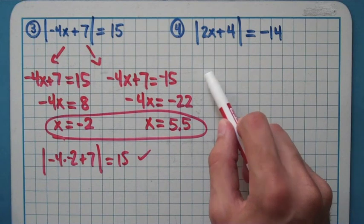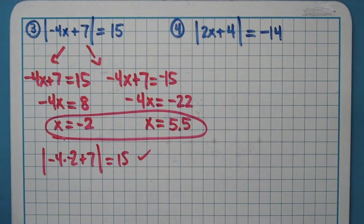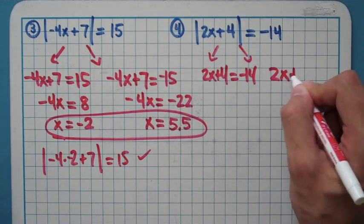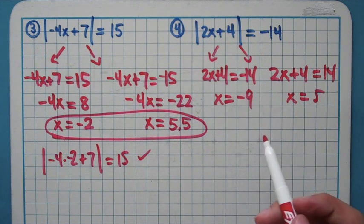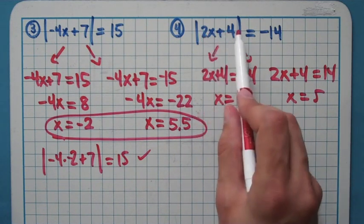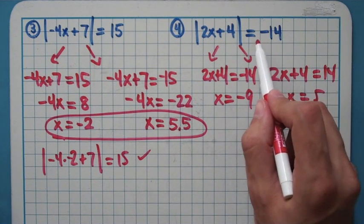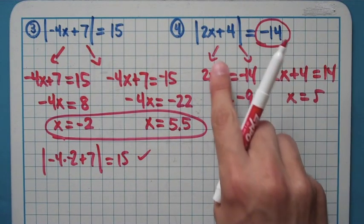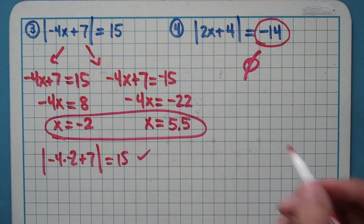One more problem: we have the absolute value of this expression equals negative 14. You might be tempted to jump straight into two bars, two equations, and you will get answers — negative 9 and 5. But if you plug in 5, you get 2 times 5 is 10 plus 4 is 14, and the absolute value of 14 is not negative 14. You get answers, but they don't work. The reason: we had an absolute value equal to a negative number. Absolute values cannot equal negatives. So if you see absolute value equals a negative, stop — there is no solution.